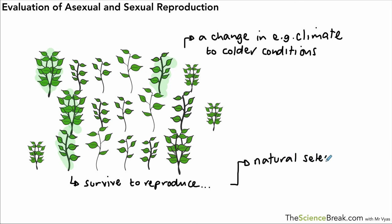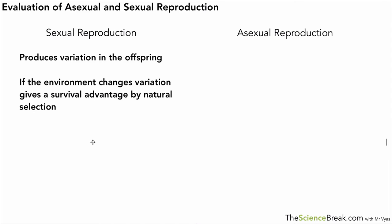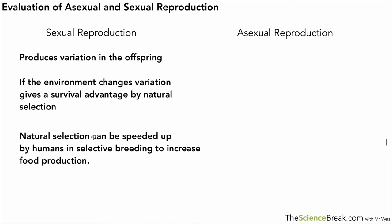We are going to look at this in a lot of detail later, but the idea is that because of that variation in the individuals — because of sexual reproduction — we are able to have this process of natural selection.